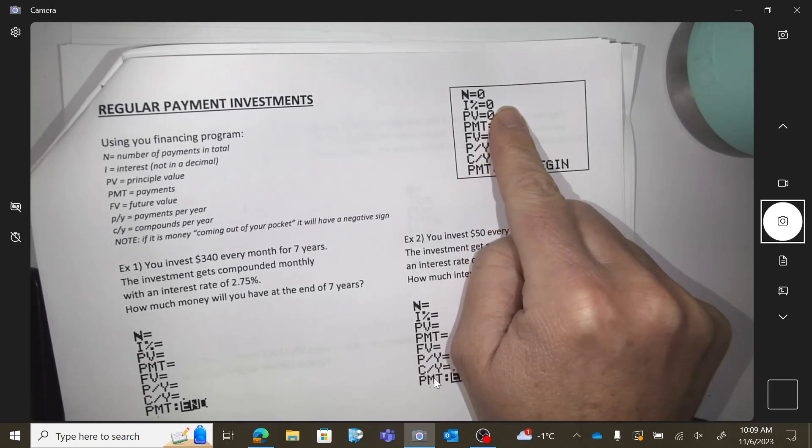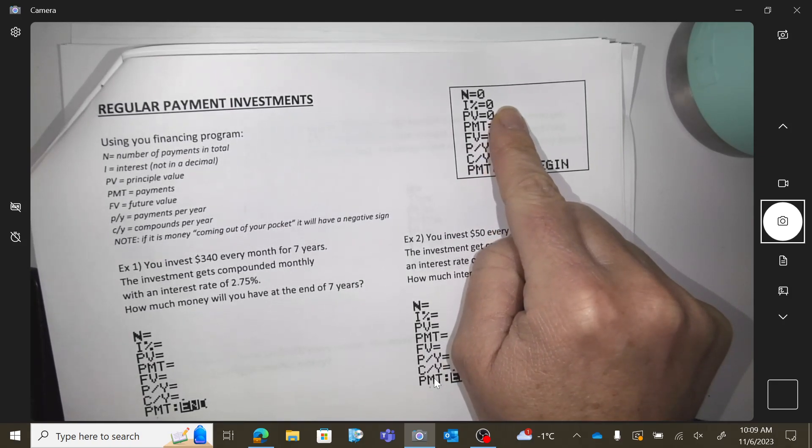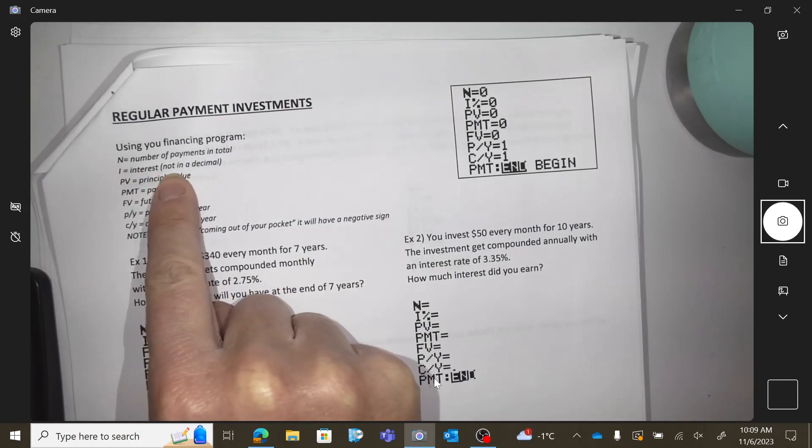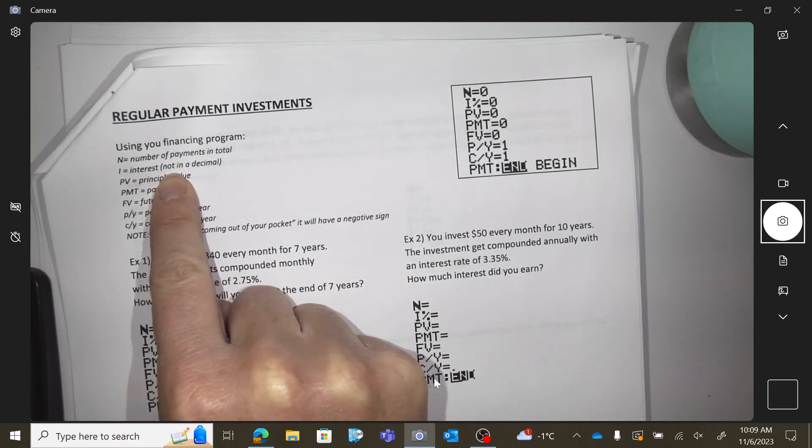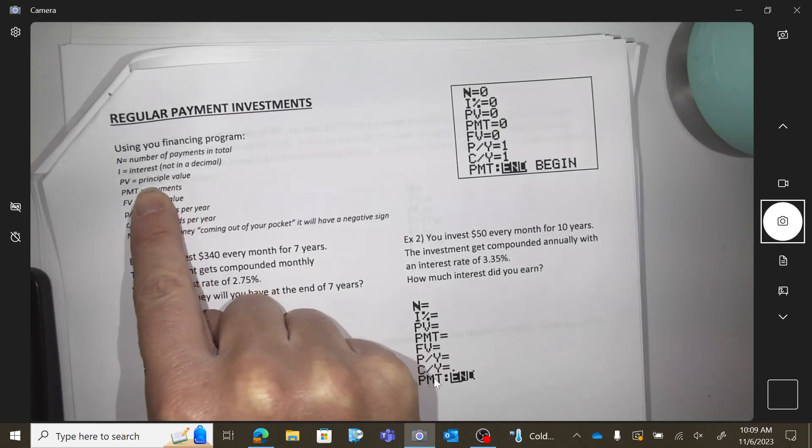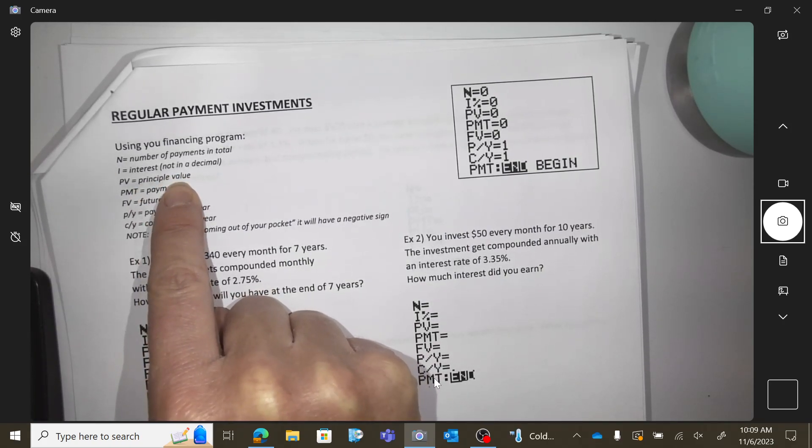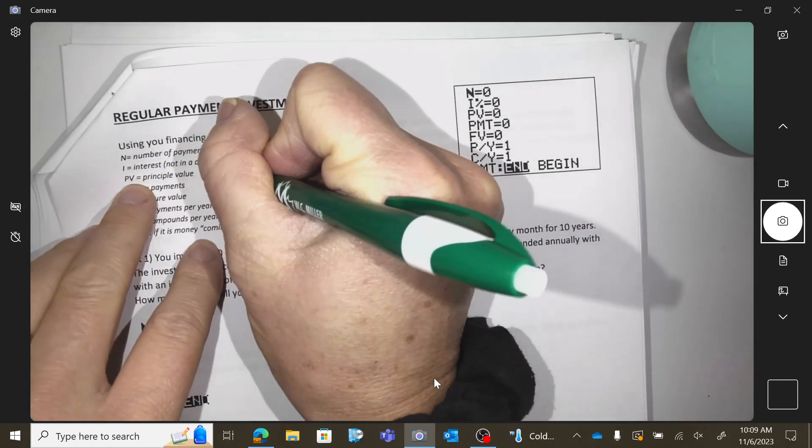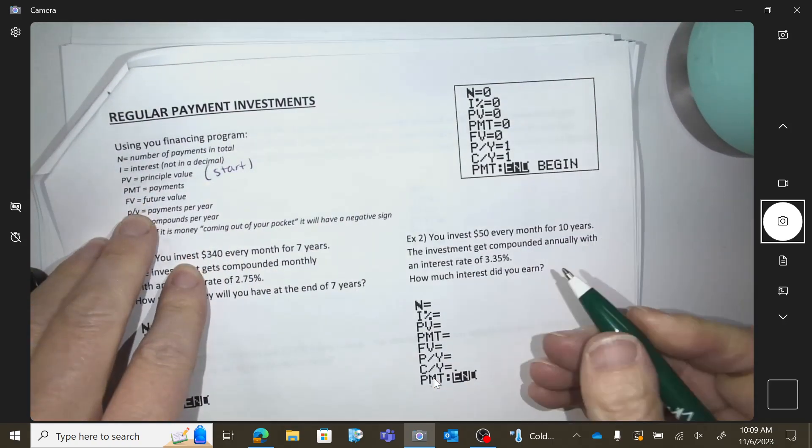N is the number of payments in total. I is the interest, and do you remember that I told you I means the interest and R means the decimal form of the interest? So if it's 3%, you write 3, not the decimal stuff. PV is principal value, aka the start, right? What you start with.